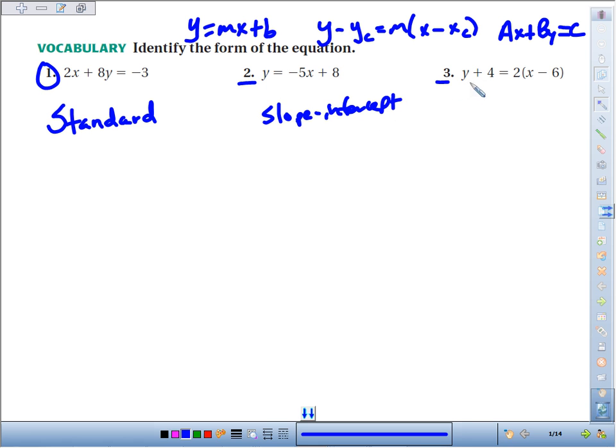And number three, y plus 4 equals 2 times x minus 6. It's kind of like writing y minus negative 4 equals 2 times x minus 6. That's our point-slope form.